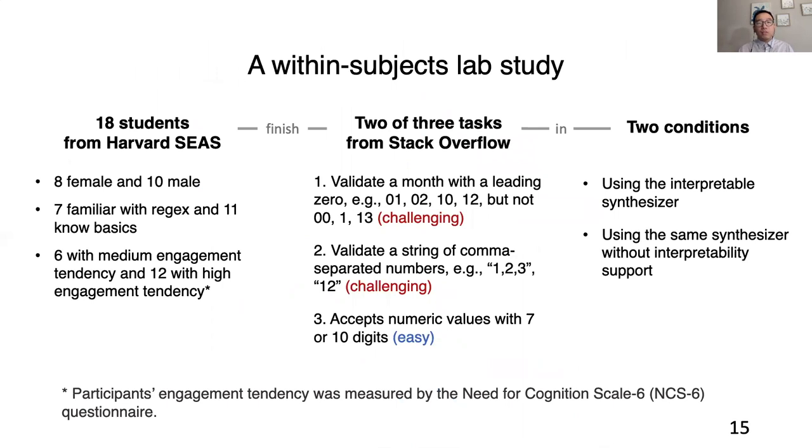We did a within-subject lab study with 18 students from Harvard CS. Each student finished two randomly selected tasks in two conditions. One task using the interpretable synthesizer, and the other task using the same synthesizer without interpretability support.